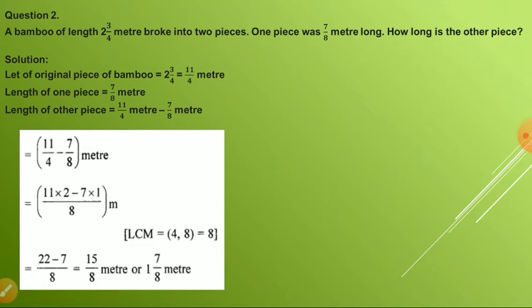Question number two: A bamboo of length 2 whole 3/4 meter broke into two pieces. One piece was 7/8 meter long. How long is the other piece? If you have five toffees and two toffees are lost, the remaining toffees are 5 minus 2. The same case applies here.